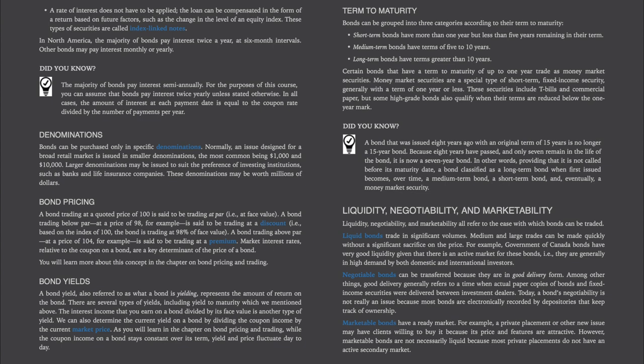Bond yields: a bond yield represents the amount of return on the bond. There are several types of yields, including yield to maturity. The interest income earned on a bond divided by its face value is another type of yield. We can also determine the current yield on a bond by dividing the coupon income by the current market price. While the coupon income on a bond stays constant over its term, yield and price fluctuate day to day.